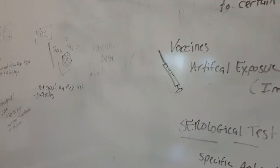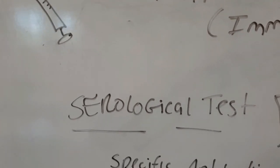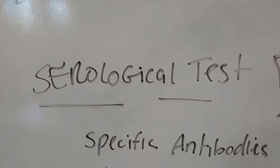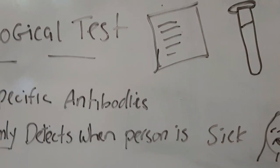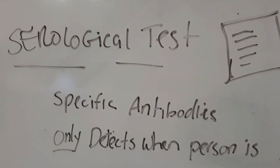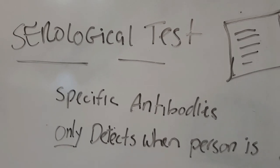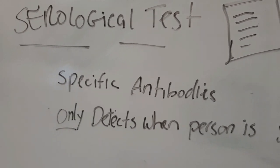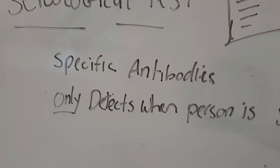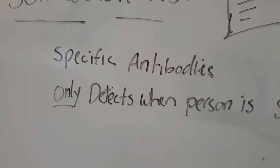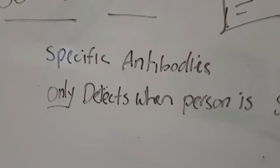The other type of testing is serological testing. What that does is test for specific antibodies. There is some drawback — antibodies don't usually show up until your immune system is fighting that virus. It is testing for the IgM, the IgA, and the IgG. Those are all the antibodies that are typically in our blood.